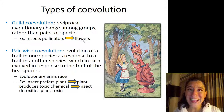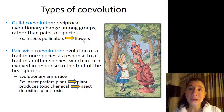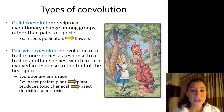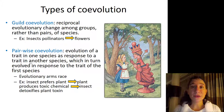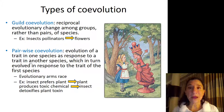We see the rise of angiosperms — the flowering plants — coinciding with the rise and diversification of a lot of the bees, the hymenopterans, as well as a lot of the lepidopterans — the butterflies and moths — and a lot of the dipterans as well. This is in contrast to pairwise co-evolution, which is the evolution of a trait in one species as a response to a trait in another species, which is in turn evolved in response to the trait of the first species — kind of going around and round in circles. The example of the flower with a really long tube and the moth with a really long proboscis would be a great example of pairwise co-evolution.